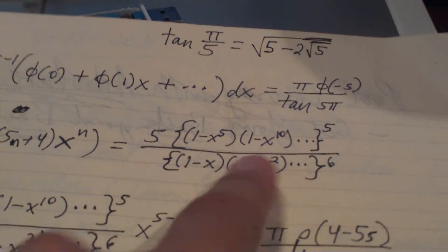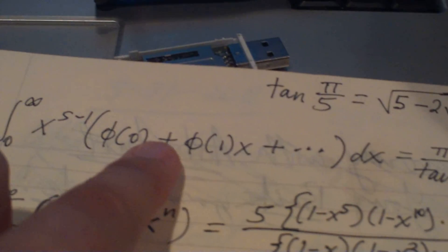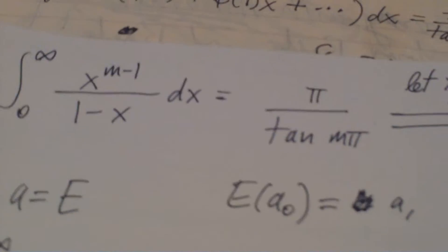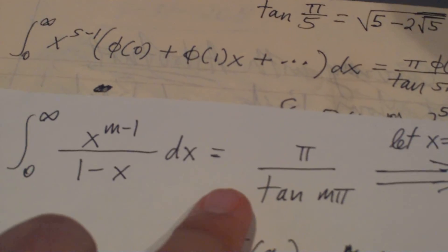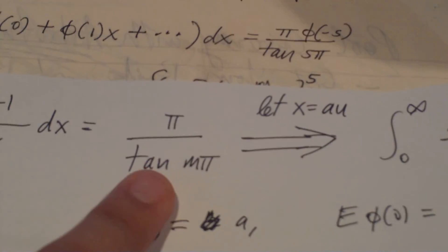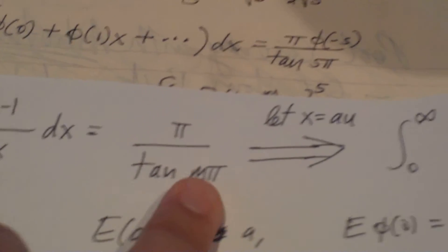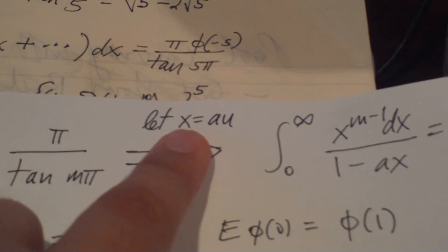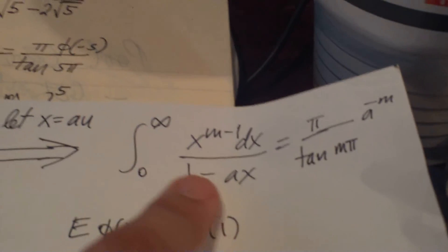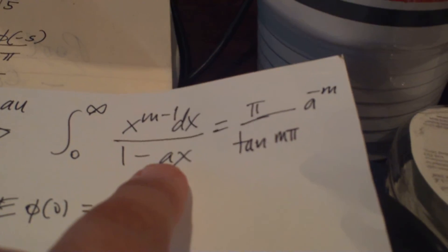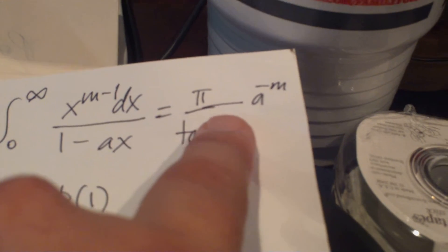Let's take a look at how we do that. I can show you a derivation of Ramanujan's Master Theorem with all positive signs. You take this integral — it's fairly well known, there are some restrictions on M; M can't be larger than 1 — and it's equal to pi over the tangent of M pi. Then we need to let x equal to au, and after doing that regular u-substitution, we get 1 minus ax, and that a is important because we're going to be doing stuff with it in a minute. We get pi over tangent(M*pi) times a to the negative m.